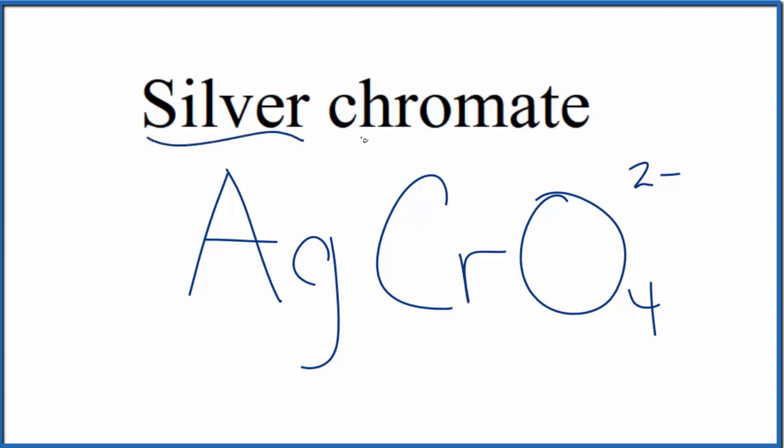So silver is a transition metal, and chromate is a polyatomic ion. So we need the charges to balance. Even though silver is a transition metal, it almost always has a 1+ ionic charge. And because silver chromate is neutral, it doesn't say ion after it, these two charges need to add up to 0, give us a net charge of 0.